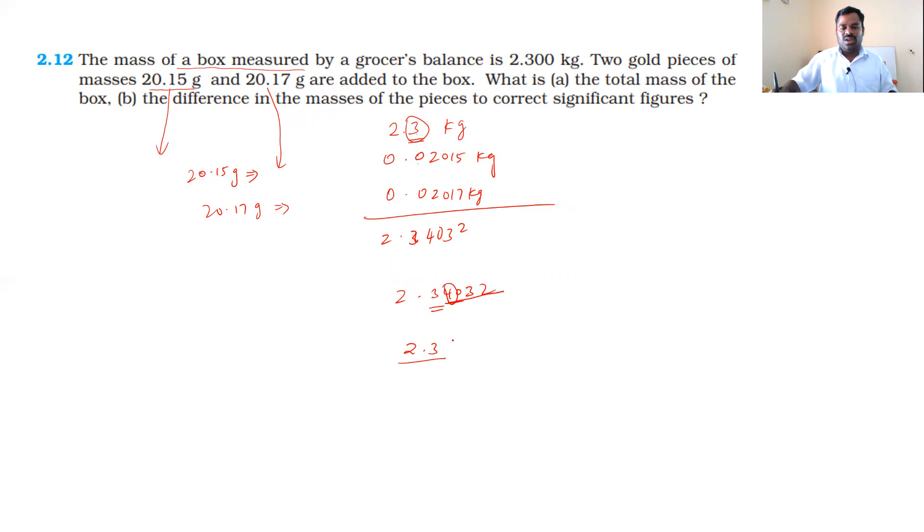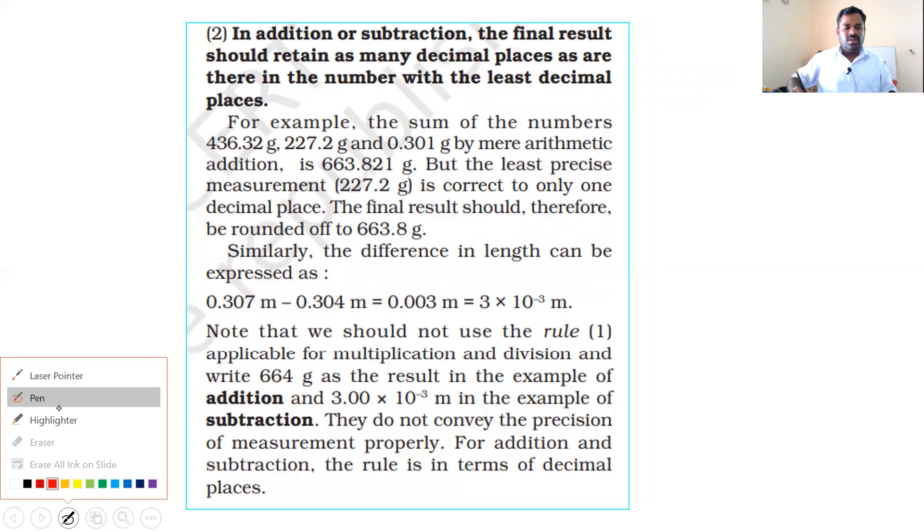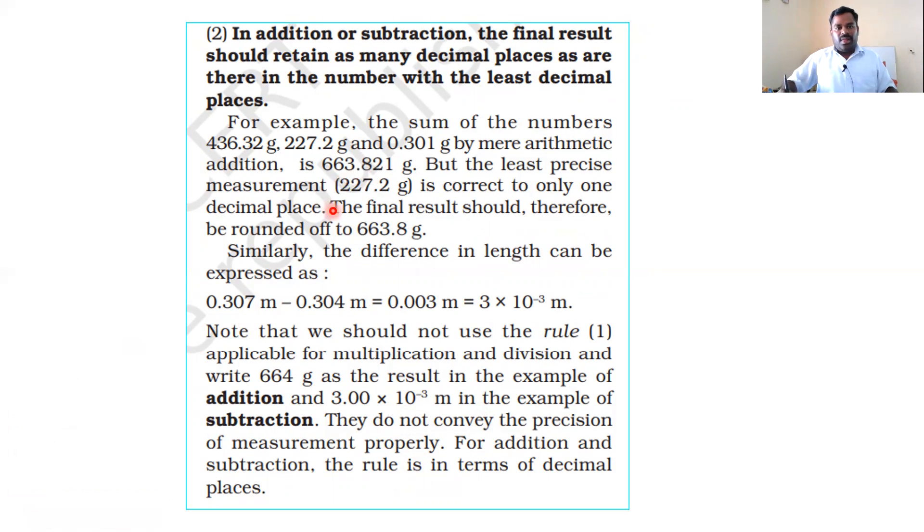So the answer is 2.3 kilograms. The second sub-question: the difference in the mass of the two pieces in the correct significant figures is 20.17 minus 20.15. The difference is 0.02. That reading is significant.